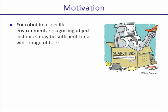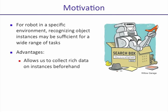For a specific robot in a specific environment where there aren't that many objects, recognizing object instances may be sufficient for a wide range of tasks. This gives us several advantages. Two major ones are that it allows us to collect rich data on the object instances beforehand, and it also allows us to perform a rigorous verification phase to determine whether we have the correct object hypothesis.